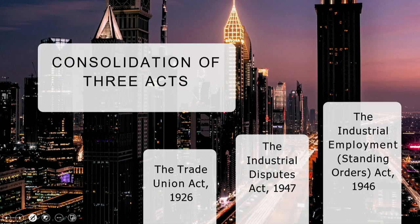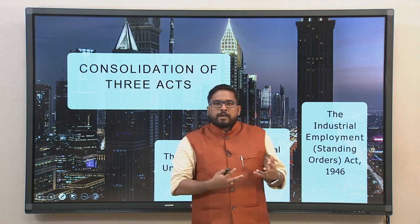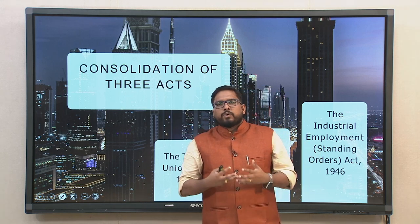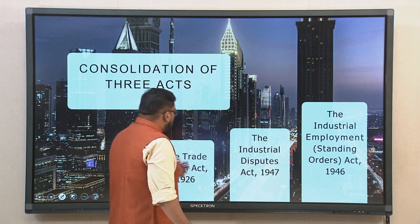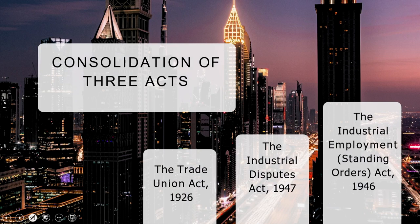Let us look into the consolidation and evolution of the Industrial Relations Code 2020. On September 19, 2020, the code was introduced in Lok Sabha; it was passed by Lok Sabha and then by Rajya Sabha on September 23, 2020. On September 28, 2020, it was assented to by the Honorable President, and on September 29, 2020, it was published in the E-Gazette.